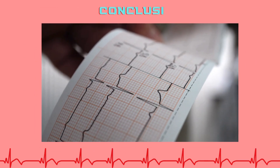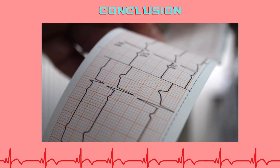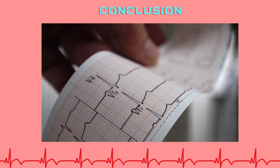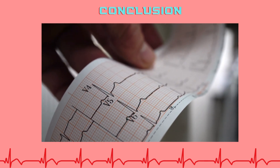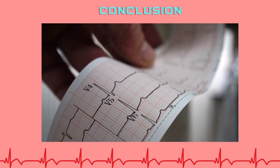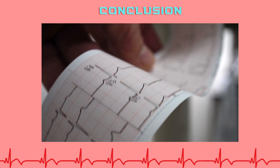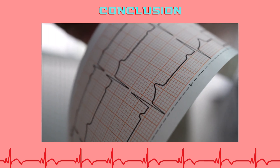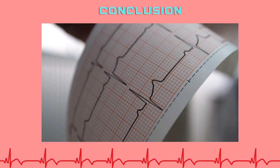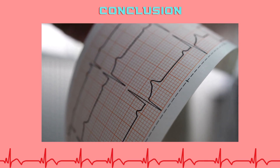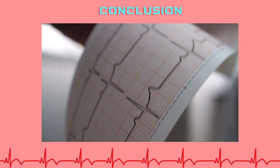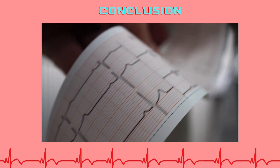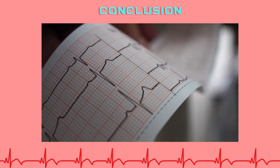Understanding the components and measurements of a normal ECG is essential. It forms the baseline for recognizing arrhythmias, ischemia, and conduction defects. In the next episode, we'll apply a systematic approach to reading ECGs step-by-step to ensure no detail is missed.